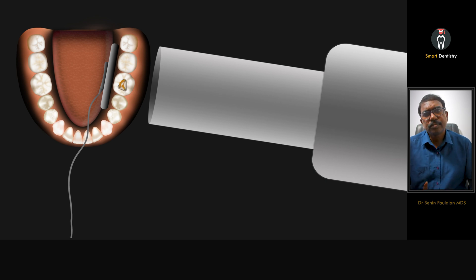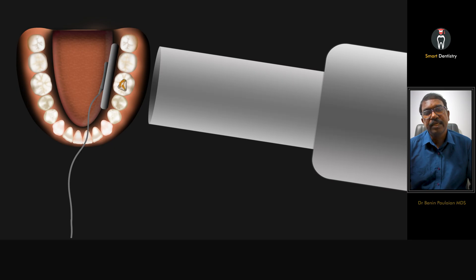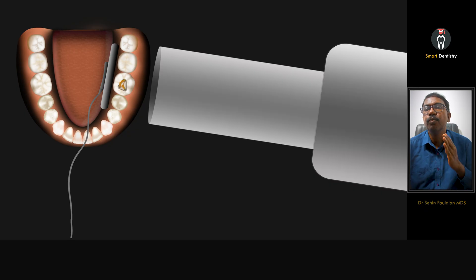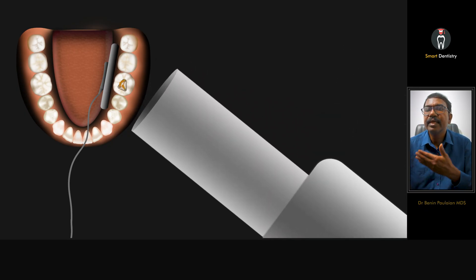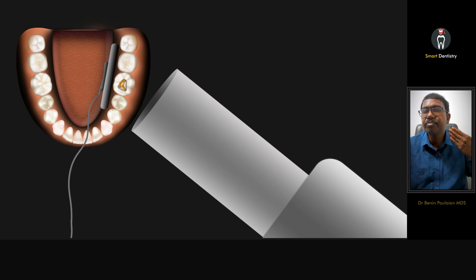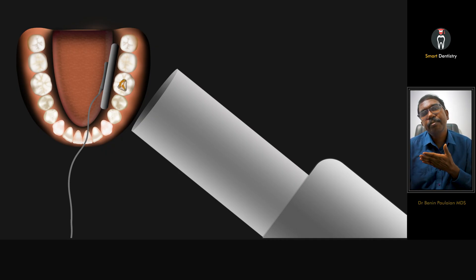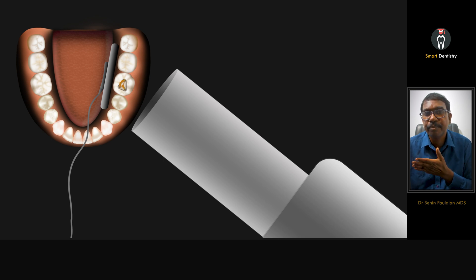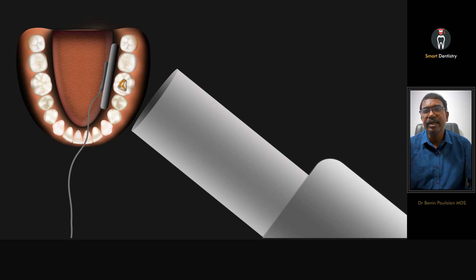Usually we take from a straight angulation. Instead of exposing the radiograph from a straight angulation, what we have to do is shift the radiographic tube from straight to a mesial angulation. So instead of focusing from the buccal aspect of the first molar, we focus from close to the mesial aspect — near the mandibular second premolar. The tube is shifted mesially, so this is called a mesial angulation.